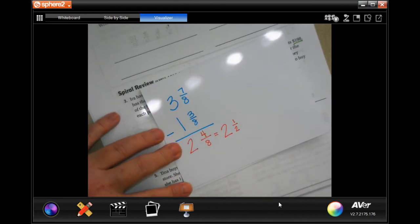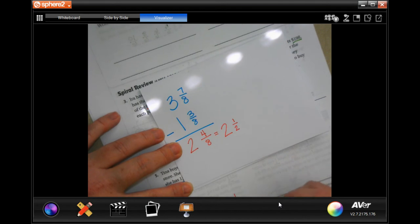You can put two and four eighths or you can put two and a half, but it needs to be labeled yards. So just YD will work perfectly.